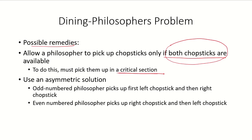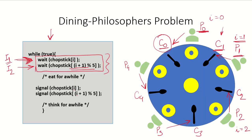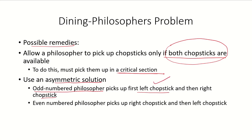The other possible solution is to use an asymmetric solution: odd-numbered philosophers (1 and 3) will pick up the left chopstick first and then the right chopstick, while even-numbered philosophers will pick up the right chopstick first and then the left. By doing so, it is ensured that both chopsticks are available to a philosopher when he is hungry, and this will not result in a deadlock. In the next video, we will look at how monitors can be used to solve this dining philosophers problem.